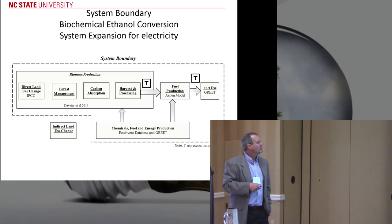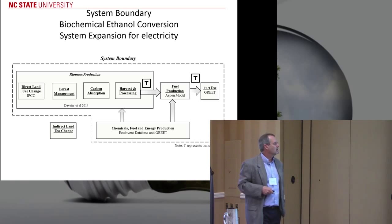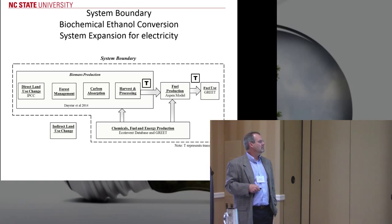Our system boundary includes biomass production — which includes direct land use change — then fuel production. We use an Aspen model to simulate the process using biochemical conversion, and we use system expansion for electricity. Combustion of the fuel in automobiles is modeled for fuel use. We use LCA databases to get chemicals and energy where we don't have primary data. Indirect land use change is not considered here.